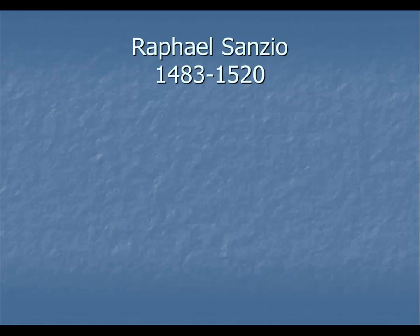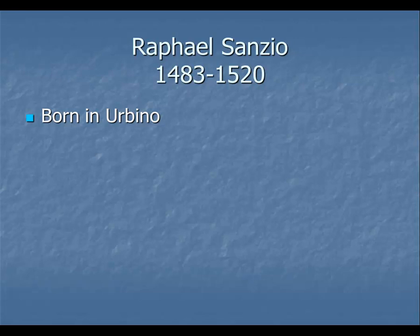Let's begin with a brief discussion of Raphael, who has some important pieces very characteristic of the High Renaissance. He was born in a town called Urbino, which was a major center of humanist learning. He would have grown up being taught the ideas of Renaissance humanism — human potential, balance and order, human mastery over chaos, and all of those important humanist ideals.